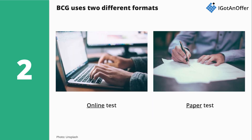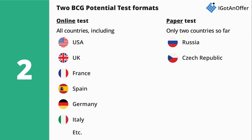We have helped hundreds of candidates pass this test over the past few years, and they have reported that BCG uses two different versions: an online version and a paper version. The test you'll take depends on which office you're interviewing with. So far, our information shows that most offices use the online version, including the US, UK, and most Western European countries. Only Russia and the Czech Republic have reported using the paper version at the time of recording this video. We regularly update this list of countries, so you should check on igotanoffer.com for the latest information about which of the two tests you are most likely to take.